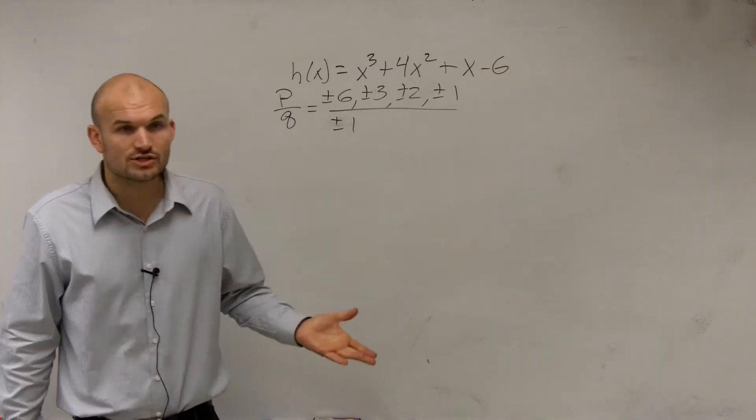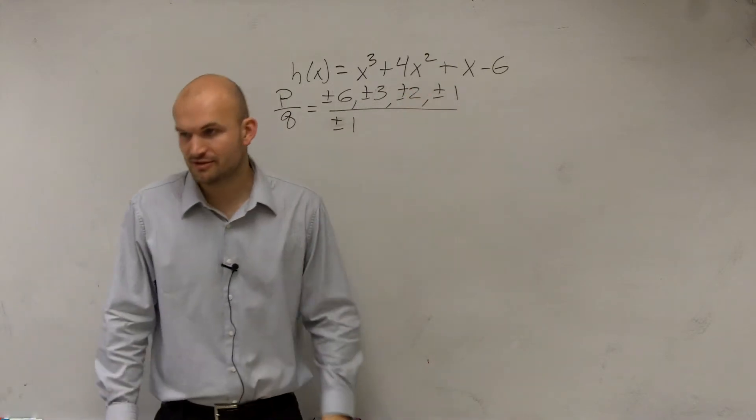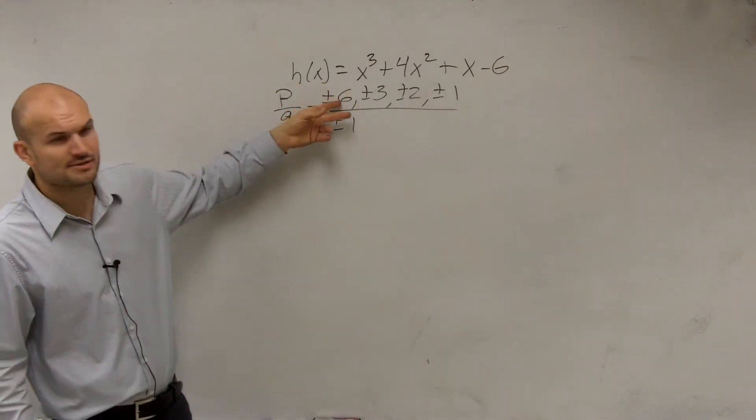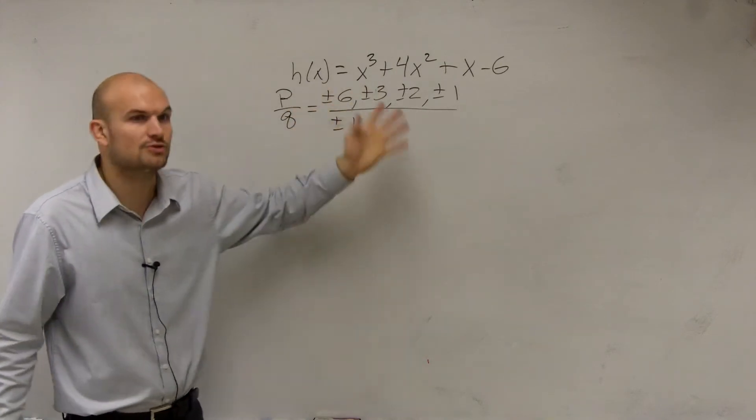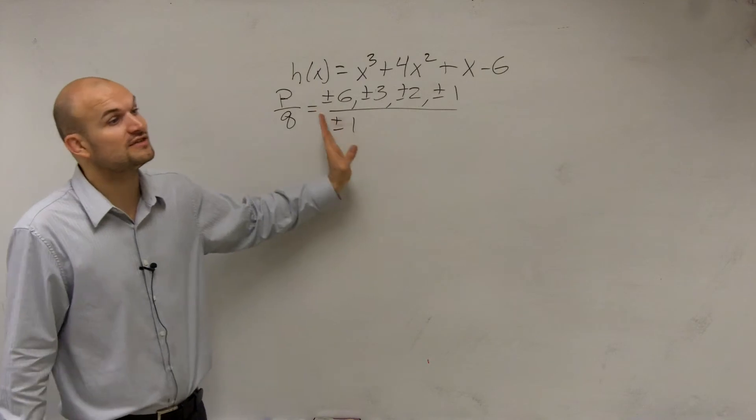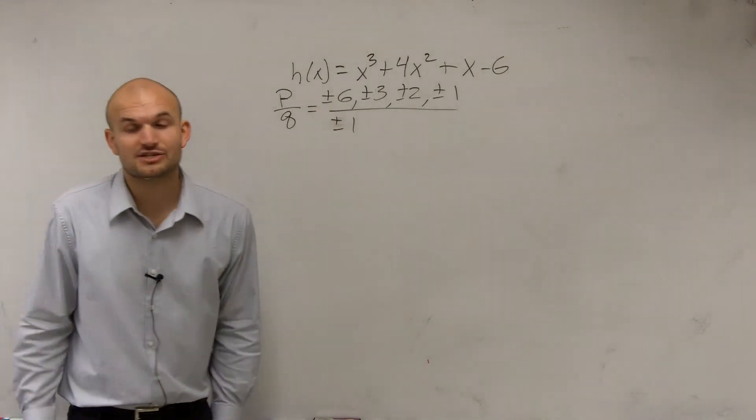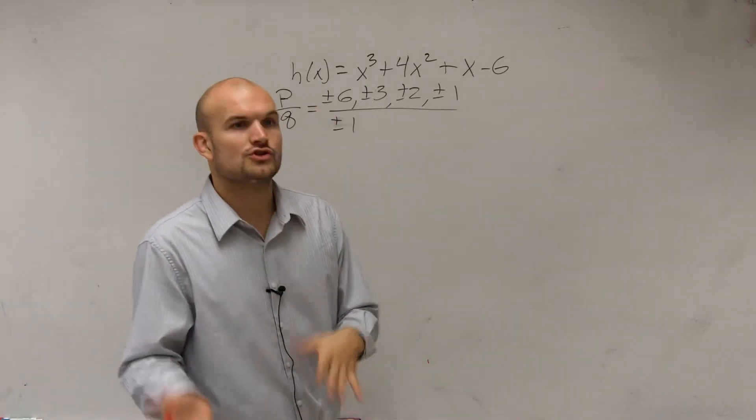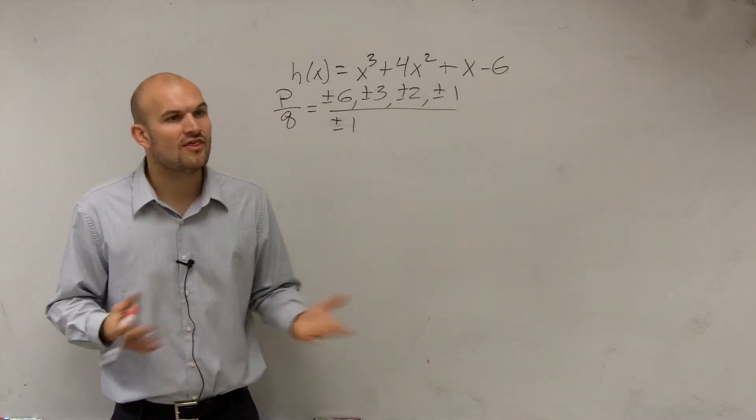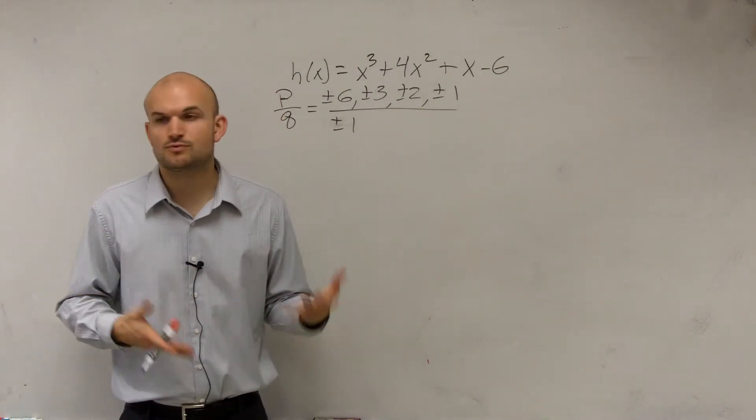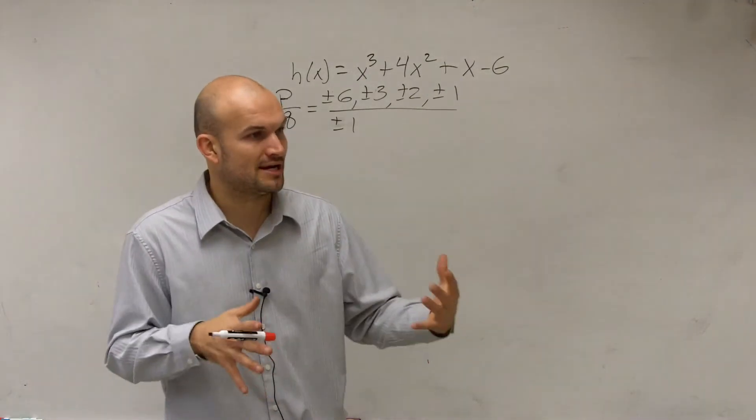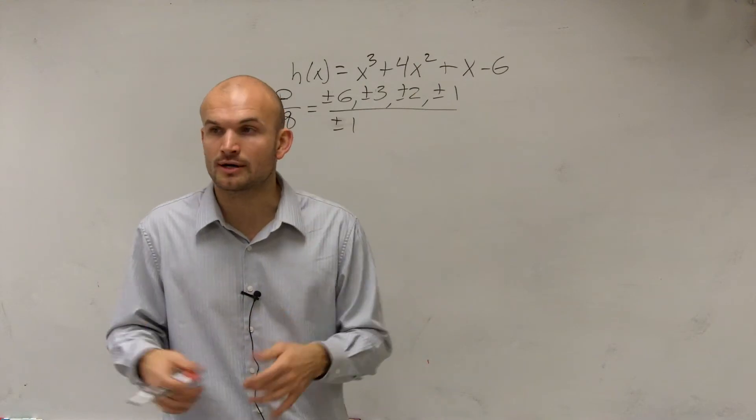Now, to determine if a rational zero works or not, you can apply synthetic division. But rather than doing all of those, my recommendation is using your graphing calculator to graph the polynomial and see if you can find the zeros. Then, all you have to do is whatever zeros you find using your graphing calculator, you still need to show work by proving to me, by using synthetic division, that those zeros work.